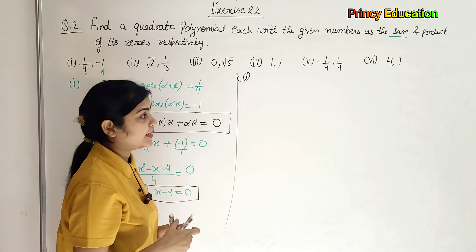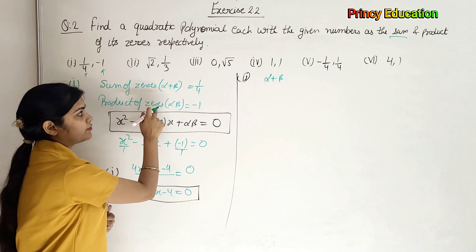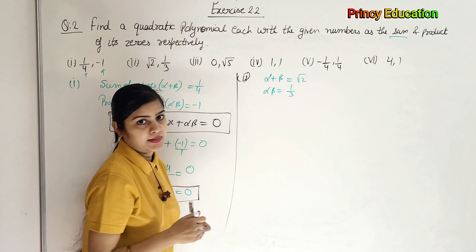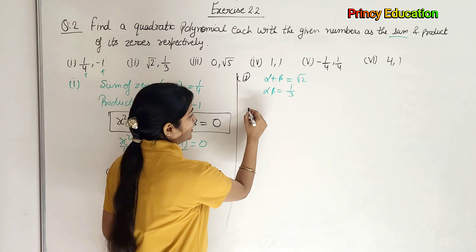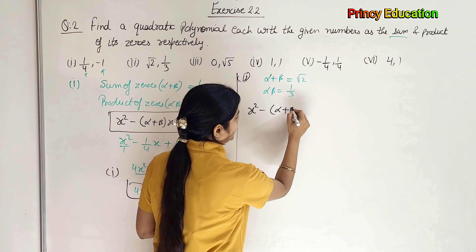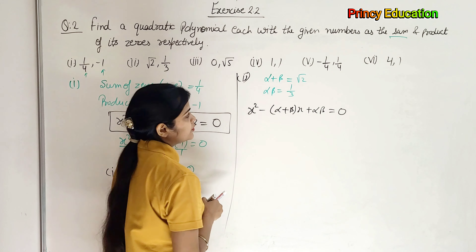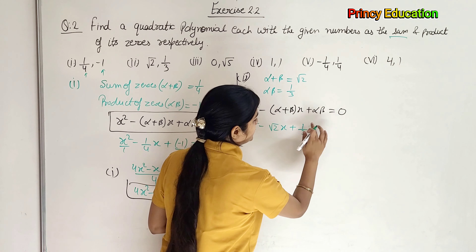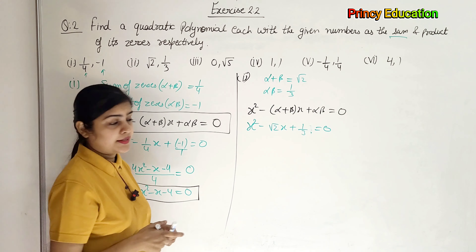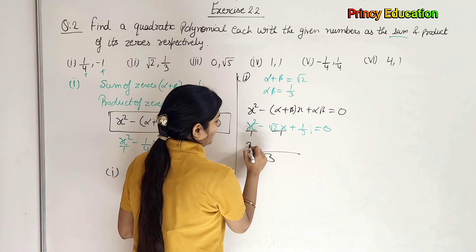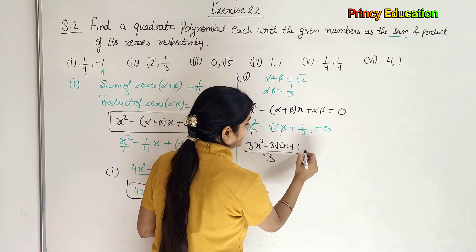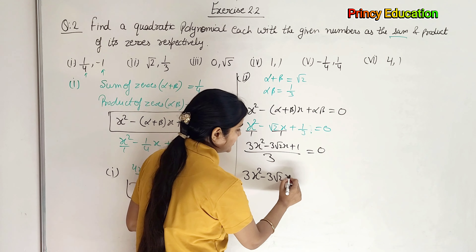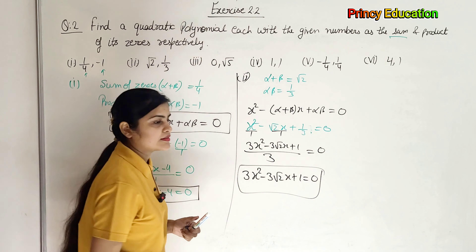So here we see alpha plus beta value. Taking the sum of zeroes and product of zeroes directly: alpha plus beta is given as root 2, and alpha times beta is given as 1/3. Now we put the value in the quadratic equation: x squared minus (alpha plus beta)x plus alpha beta equals zero. Putting in values: x squared minus root 2 times x plus 1/3 equals zero. Since 1/3 is in the denominator, we take LCM 3. So 3x squared minus 3 root 2 times x plus 1 equals zero. This is the second equation.